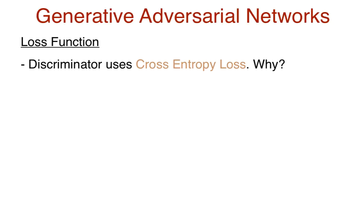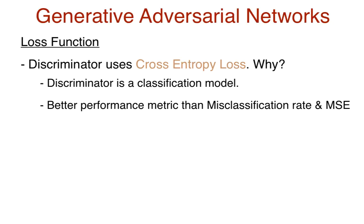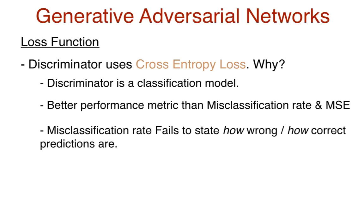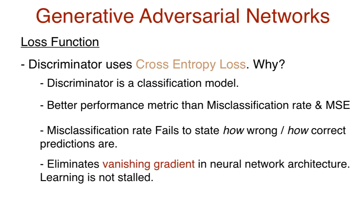The discriminator uses a cross-entropy loss. We are dealing with a classification model, and cross-entropy loss is a better performance metric than classification error or mean squared error (MSE). Classification error computes the number of samples misclassified but does not take into account how off those predictions were — it only cares about the final classification result. In cross-entropy loss, it is possible to have a model which misclassifies more samples yet be considered a better model, simply because when it was wrong, it wasn't wrong by much. Another reason for cross-entropy loss in neural network architecture is to eliminate the vanishing gradient during training — the change in weights does not become zero, and hence training is not stalled.